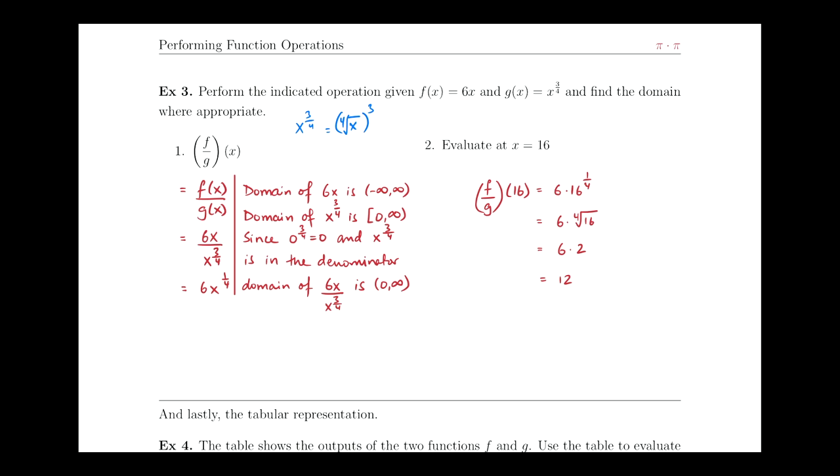And in part b, or part 2, we're asked to evaluate at x equals 16, which is basically just saying plug 16 into the function. So f over g of x was 6x to the 1 fourth. We just figured that out in part a, or part 1 rather.